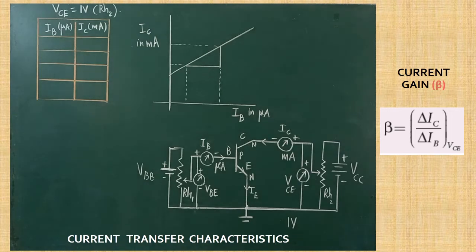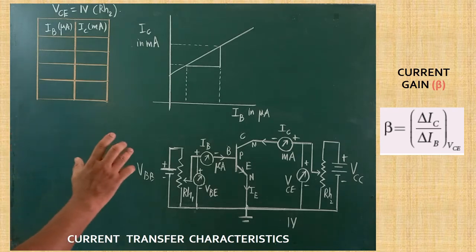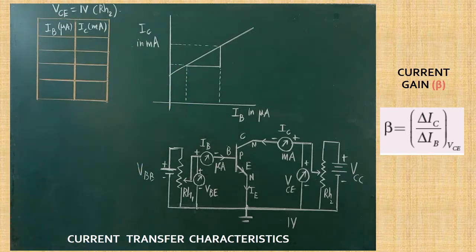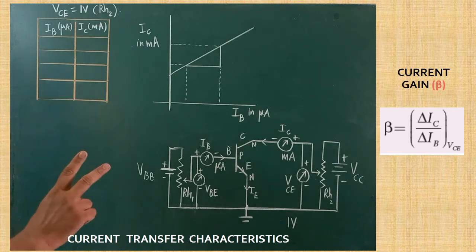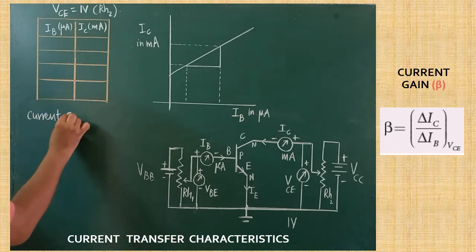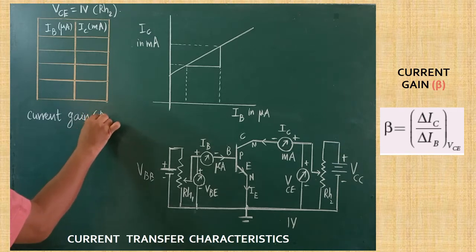Now we are going to learn how to find out the second parameter of the transistor in CE mode. The same circuit is to be used. The second parameter of the transistor is called current gain. To find out the current gain in CE mode, a graph called the transfer characteristics graph is drawn. From this transfer characteristics graph, we find the second parameter — current gain. The current gain symbol in CE mode is represented by the letter beta.